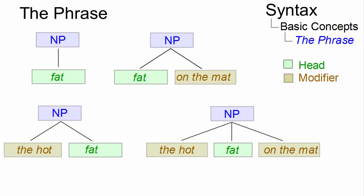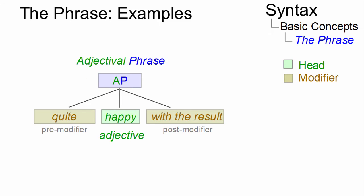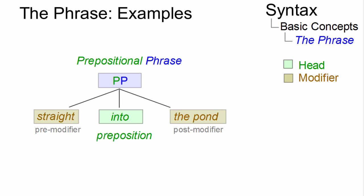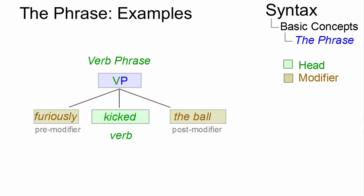Further, major phrase types include adjectival phrases, such as 'quite happy with the result,' adverb phrases like 'quite independently of other people,' prepositional phrases such as 'straight into the pond,' or verb phrases like 'furiously kicked the ball.'